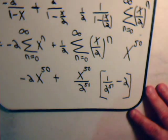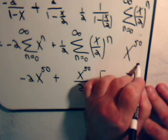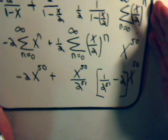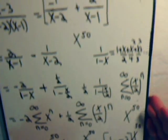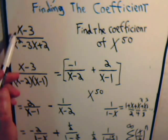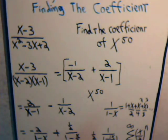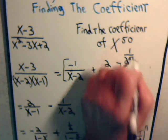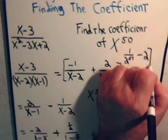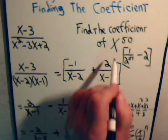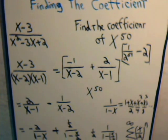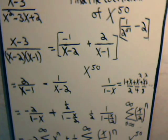So the coefficient of x to the 50th would be 1 over 2 to the 51 power minus 2. And there it is. That's our coefficient of x to the 50th. So going back to here, when we have this, the coefficient of x to the 50th, again, 1 over 2 to the 51 power minus 2. That's the coefficient. And that's the procedure in this circumstance of what you'd have to use to find that coefficient.